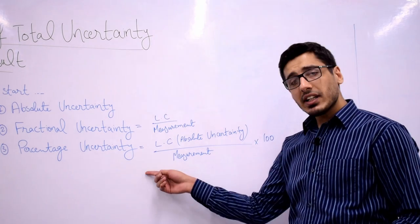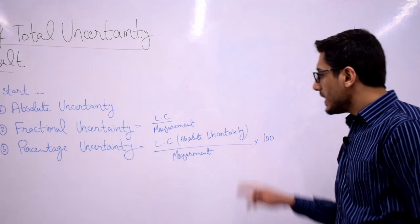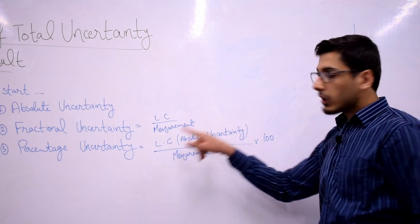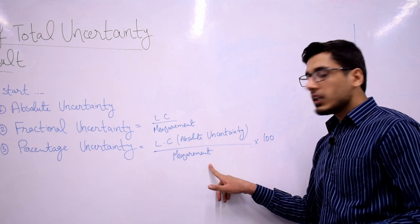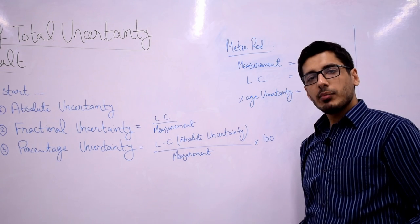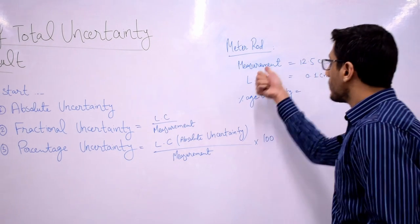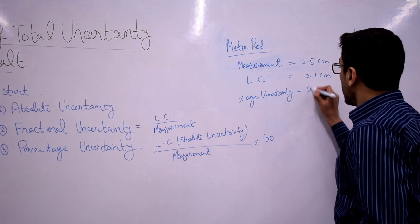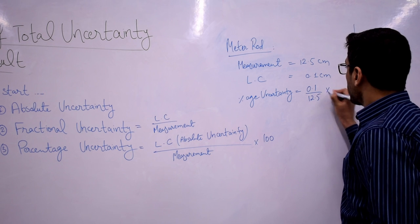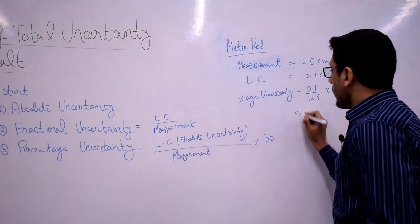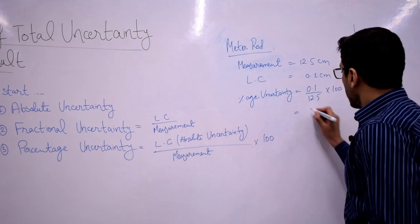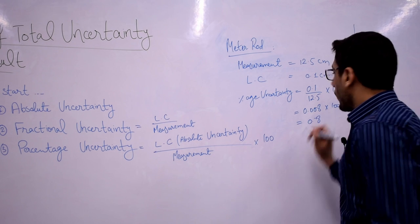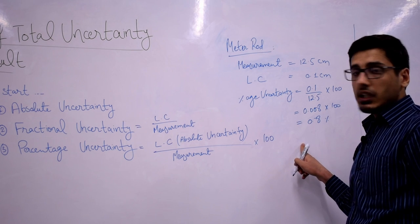The third definition is percentage uncertainty. This is very similar to fractional uncertainty, except that in the end you multiply by a hundred. So percentage uncertainty equals the least count, or absolute uncertainty, divided by the measurement, multiplied by hundred. Taking the same example where the measurement is 12.5 centimeter and the least count is 0.1 centimeter, the fractional uncertainty was 0.008, so you multiply 0.008 by hundred and your result is 0.8 percent. This is the percentage uncertainty in your measurement.